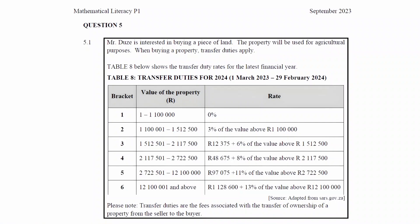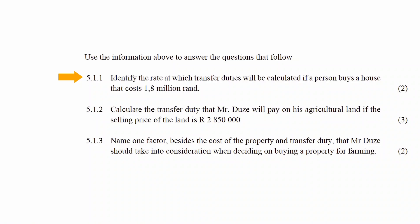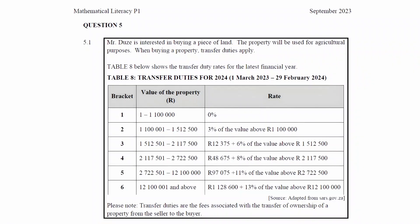We have to use the information in Table H to answer the questions that follow. In Question 5.1.1, you have to identify the rate at which the transfer duties will be calculated if a person buys a house that costs 1.8 million rand. For a house that costs 1.8 million rand, the value of the property will fall into the range of R1,512,501 to R2,117,500. So the rate for this bracket will be R12,375 plus 6% of the value above R1,512,501.